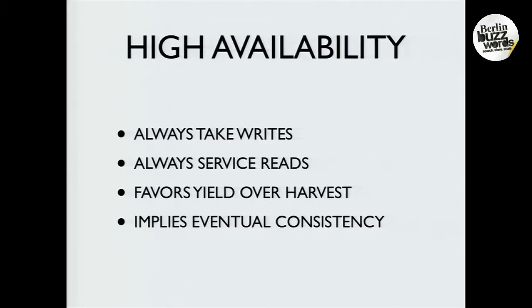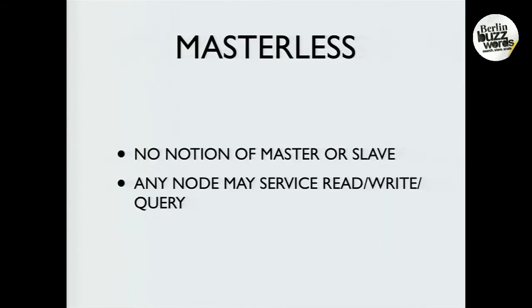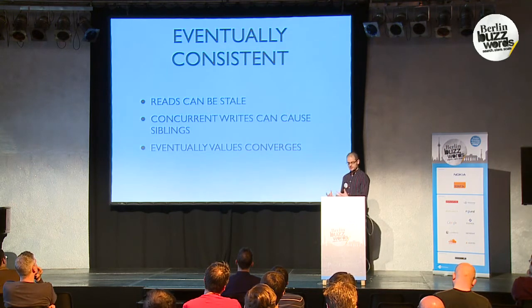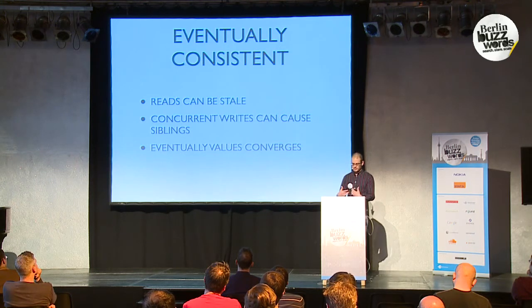High availability: always takes writes, always takes reads. It favors yield over harvest, which I'll explain a little later, and it implies eventual consistency to have that availability. So it's masterless — there's no notion of a master or slave in React. All the nodes are heterogeneous, all treated equally, and can all perform the same operations. So any node can service a read, write, or query. Eventually consistent: reads can be stale, you can have concurrent actors on a given key which can cause siblings, but eventually those values will converge.